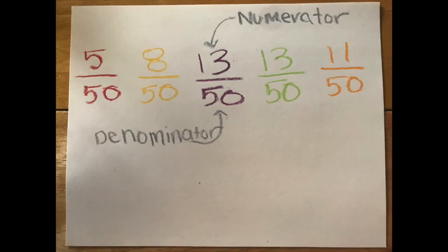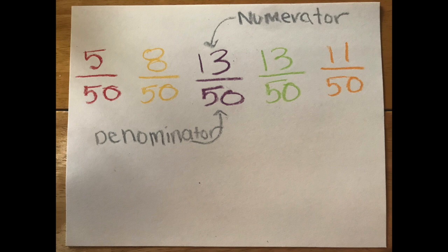I chose to use 50 Skittles because this is an easy number to convert to a fraction, decimal, and percentage. 50 is the total amount of Skittles I have, so it is my denominator.